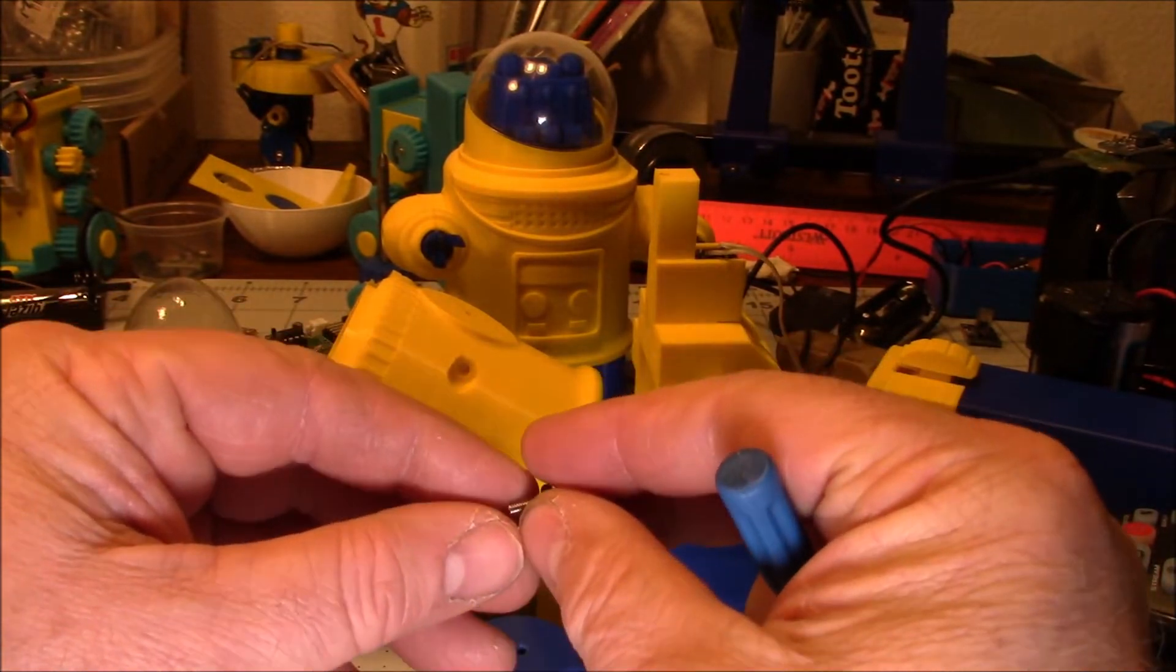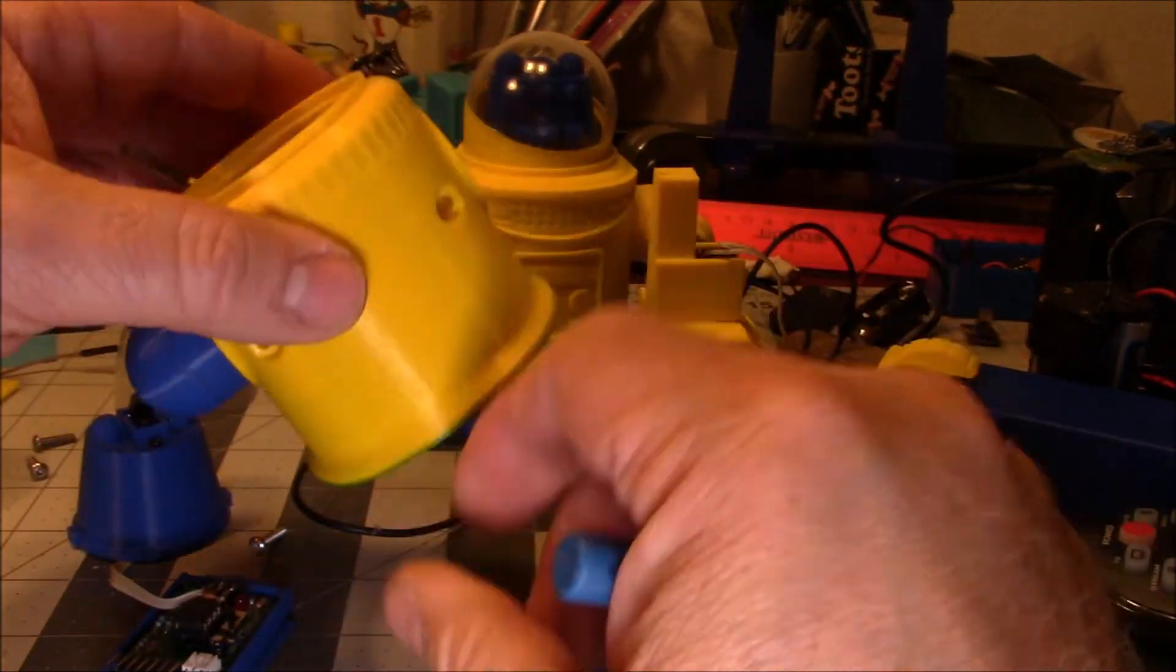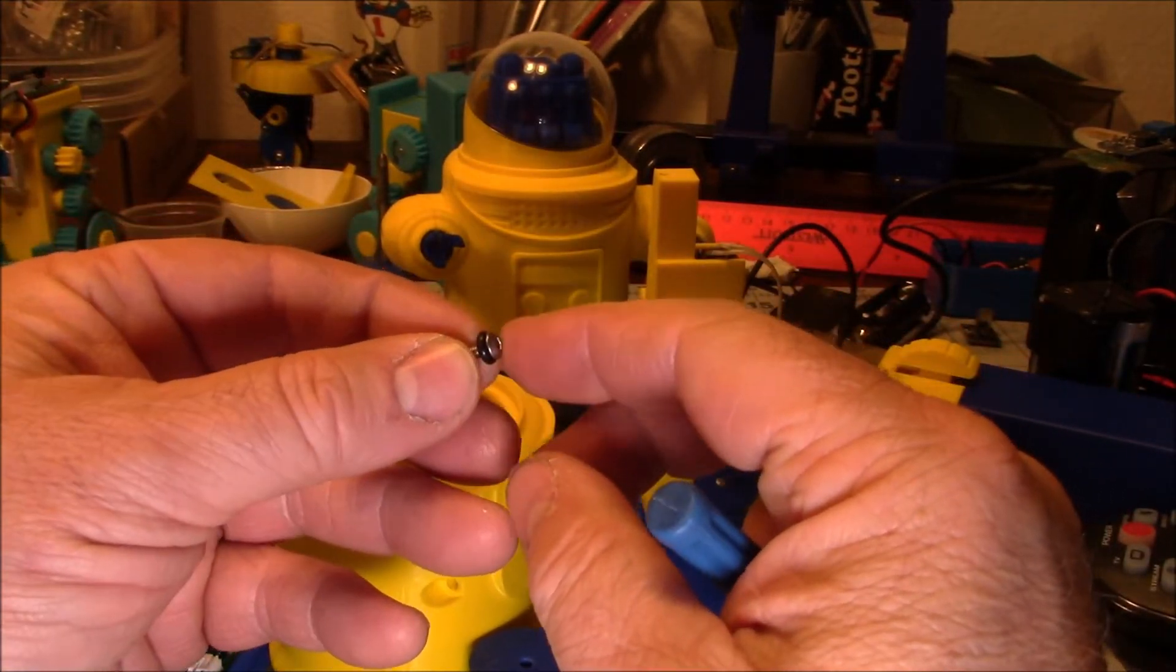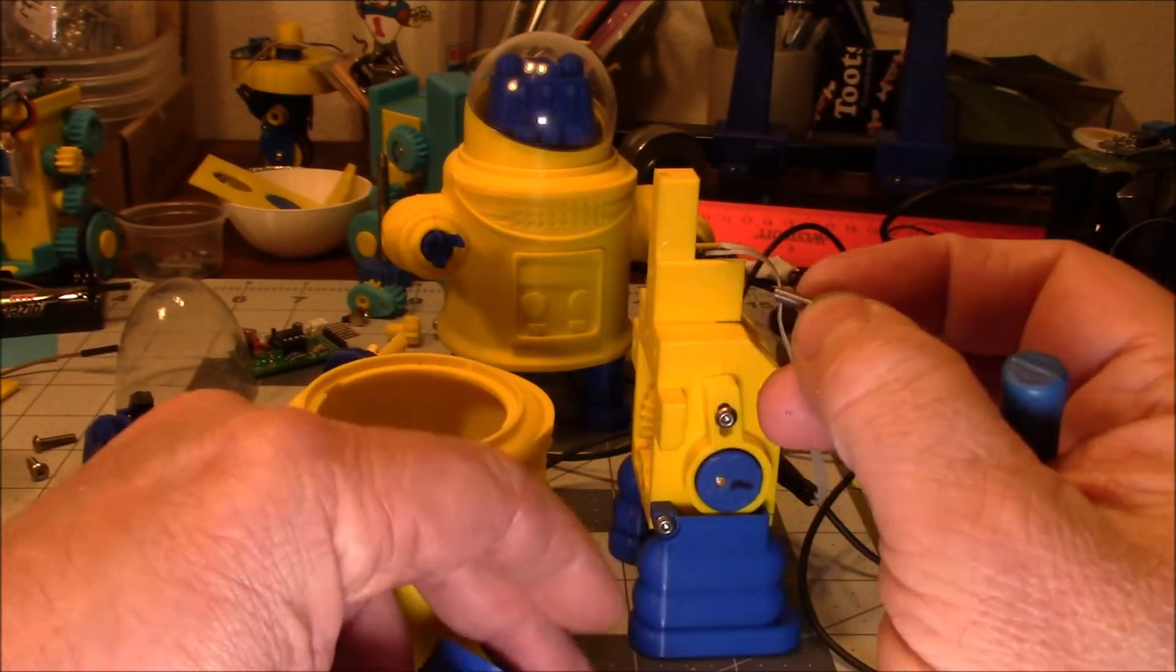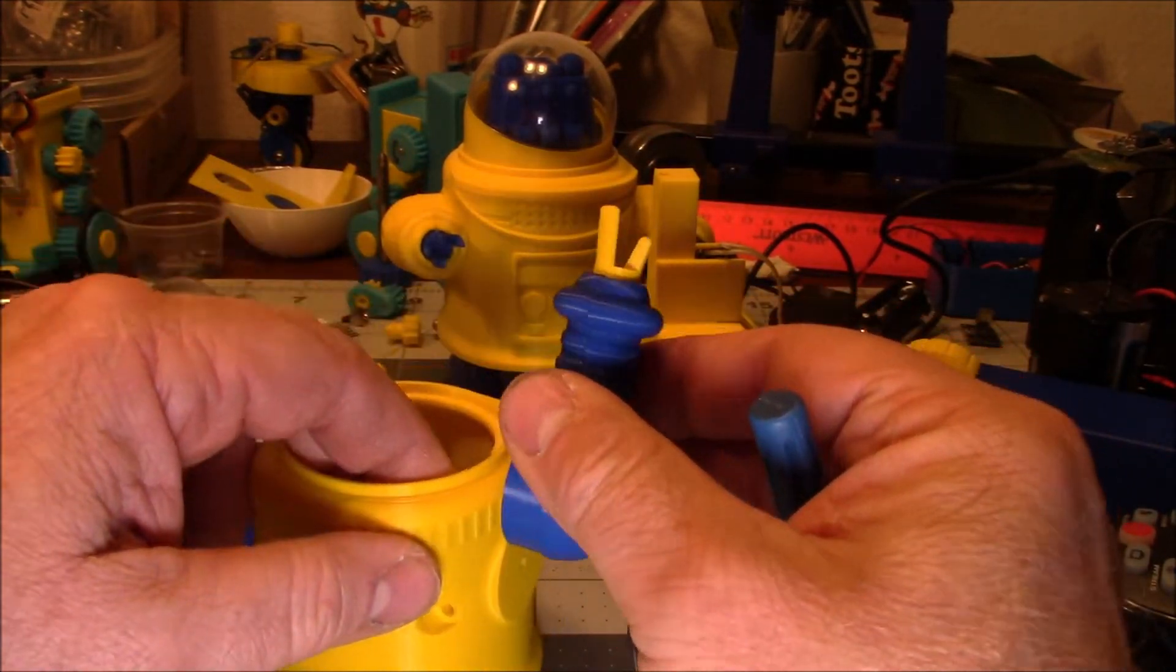This is the same 3mm by 12mm screw used in other places. One thing about this, so that the arms are poseable, need a little bit of spring action. That's just done with an O-ring out of a Harbor Freight O-ring kit. All of it. That provides you a little bit of tension to keep the arm in place.